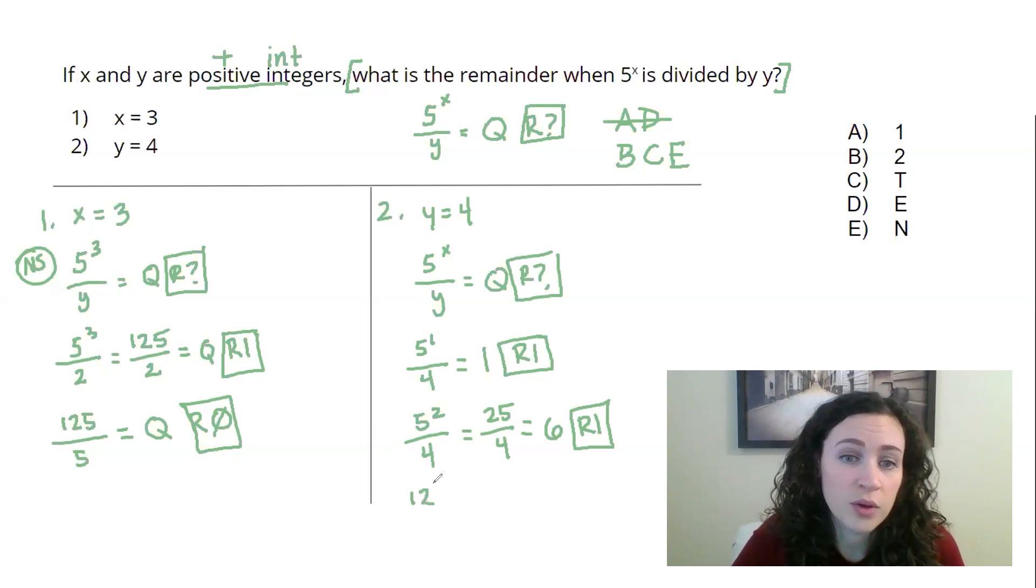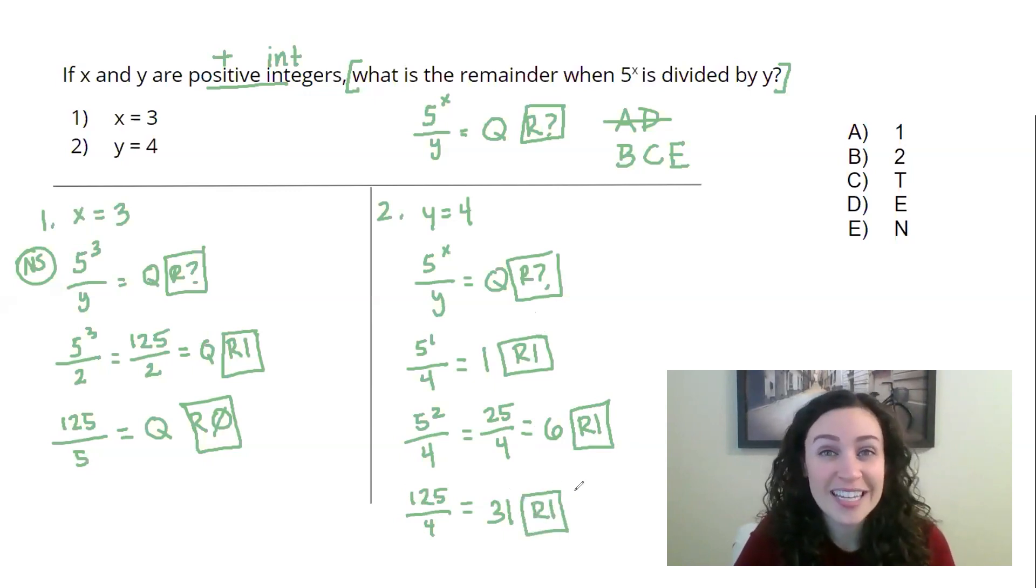We already know 5 to the 3, so I'm going to do this one as well, but I'm starting to suspect that we have this pattern appearing, that we might always see this remainder of 1 appear. So 4 goes into 12 three times, and then it goes into 5 one time with, you guessed it, a remainder of 1. At this point it is safe to assume sufficiency for statement 2.